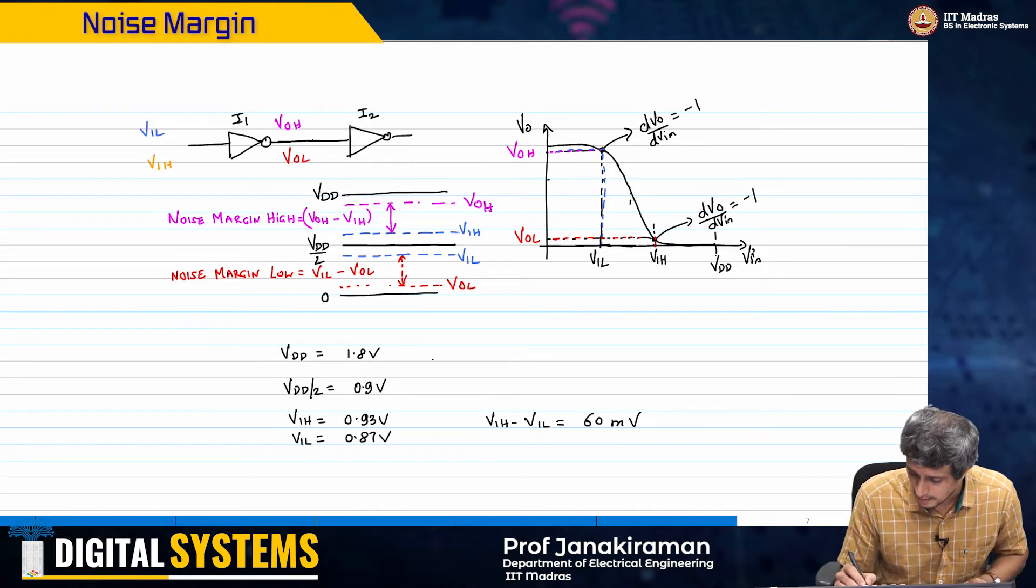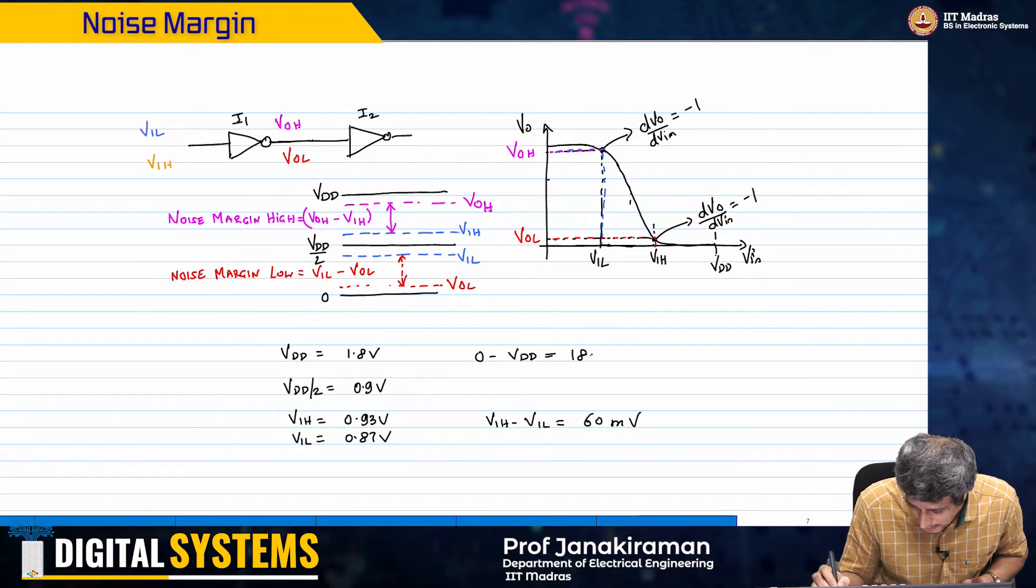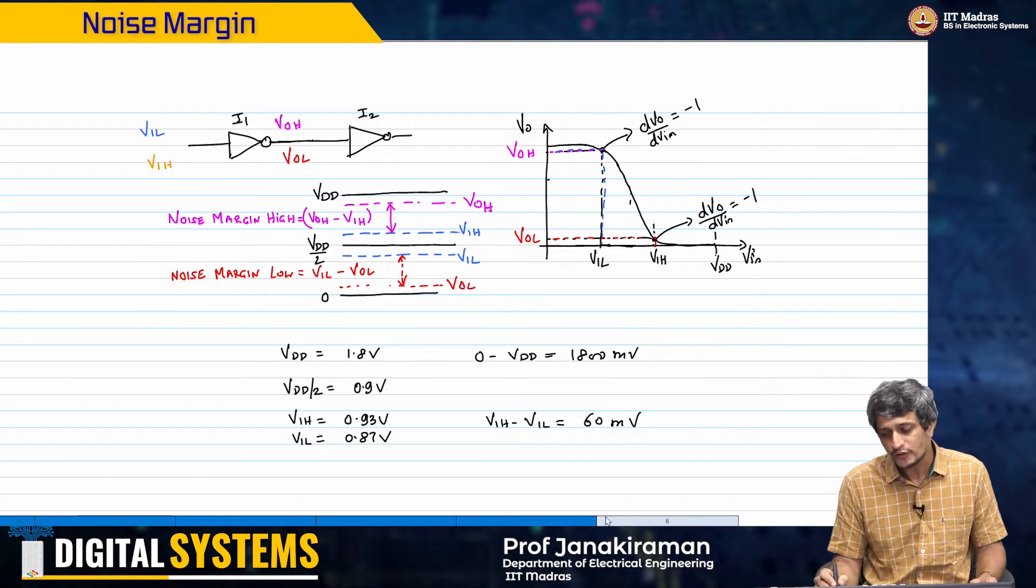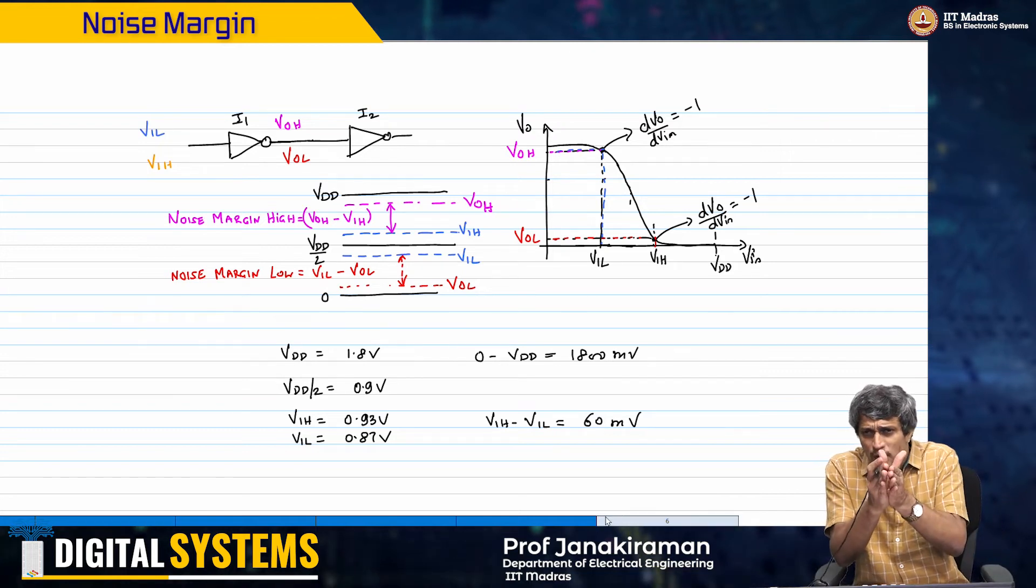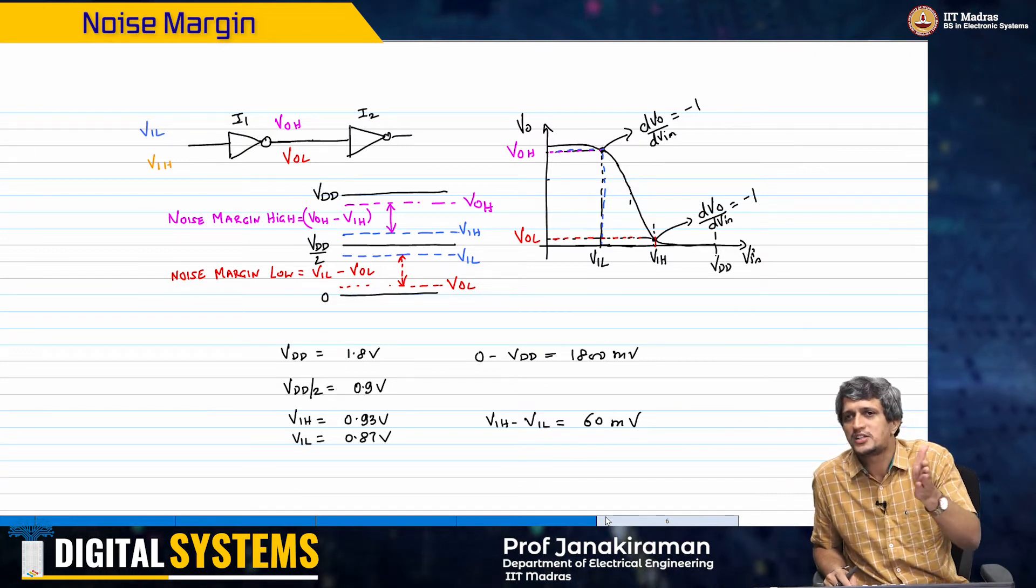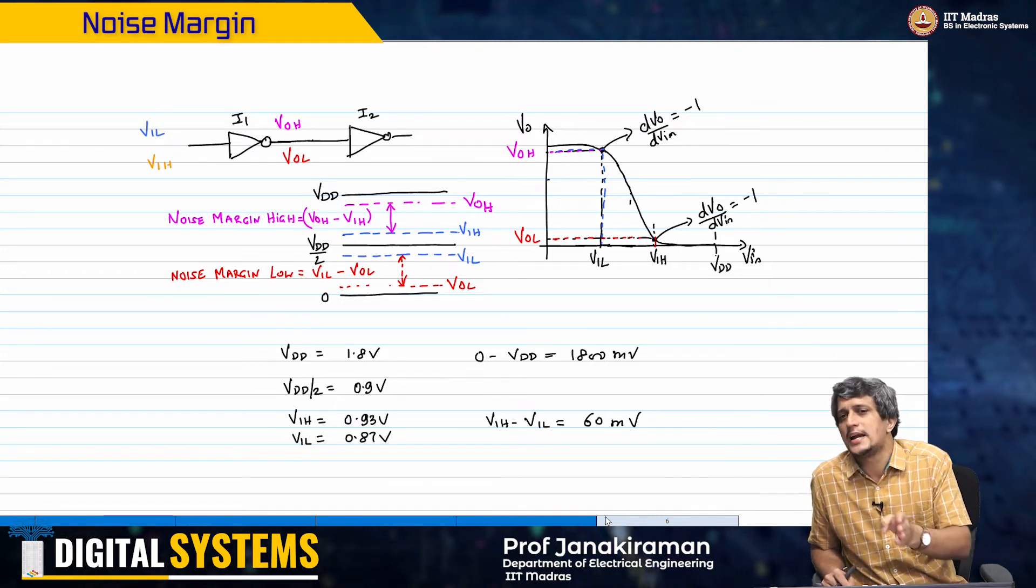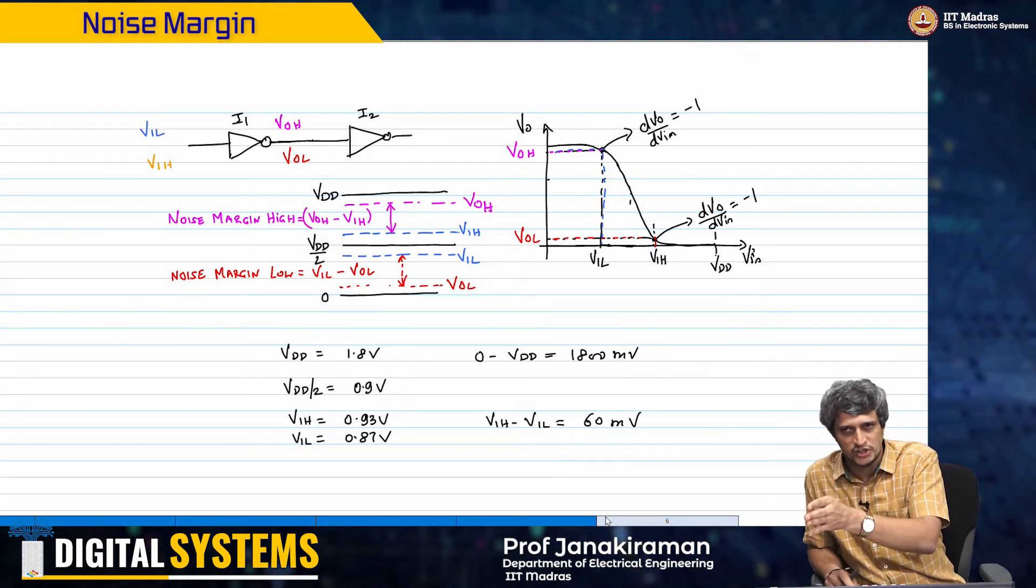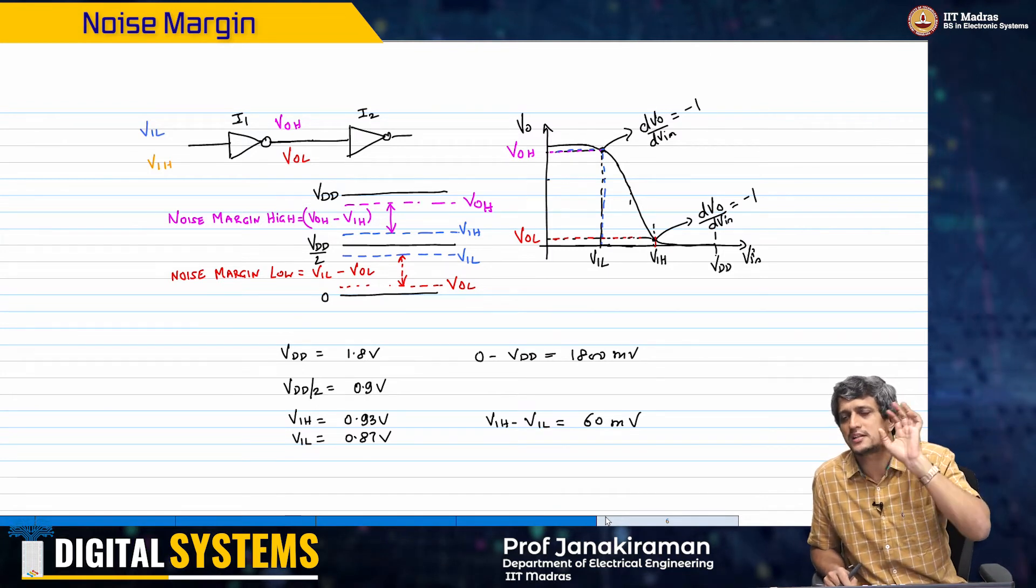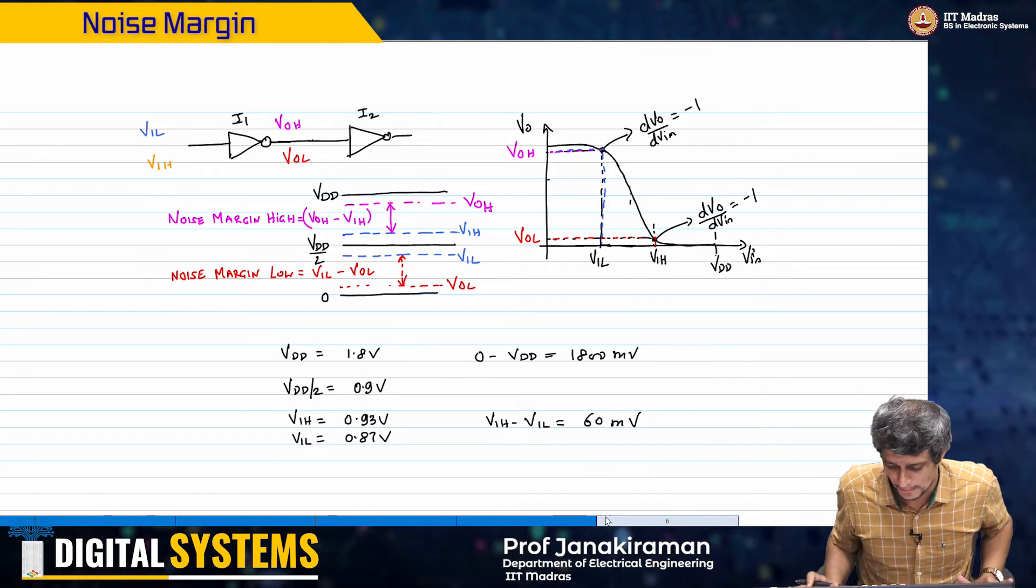What is the signal swing? 0 to VDD is 1800 millivolts. Of that, only 60 millivolts is an indeterminate region. Anything below 0.87 volts is treated as logic low. Anything above 930 millivolts is treated as logic high. Only this intermediate 60 millivolts is indeterminate and cannot be considered as either logic 0 or logic 1.